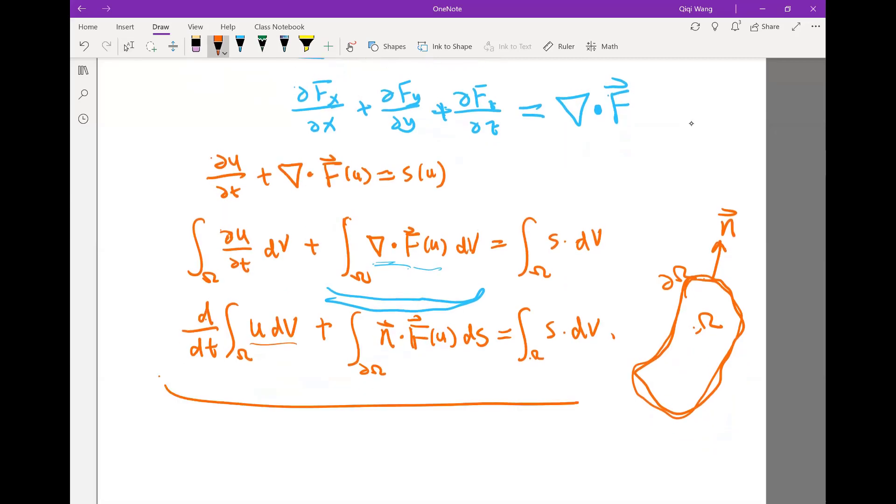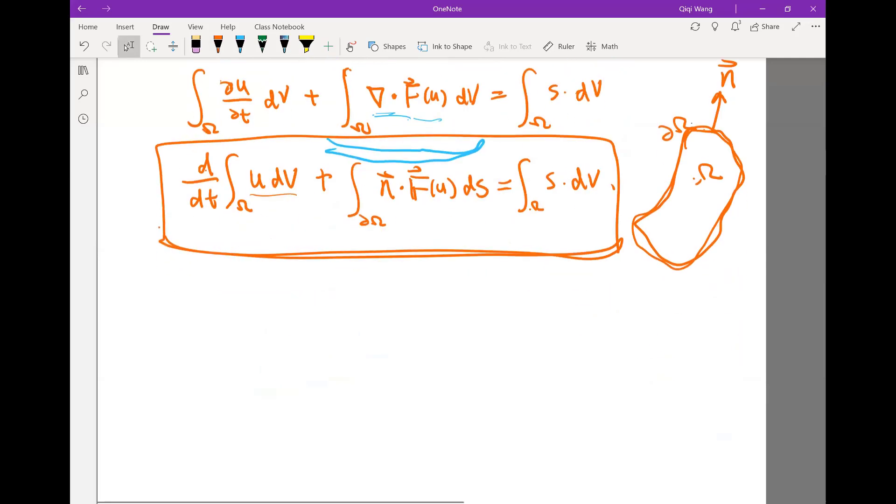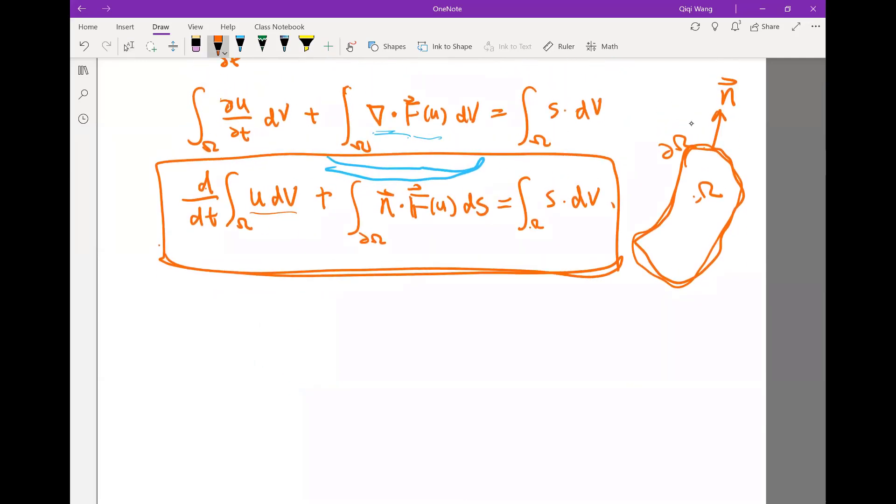So this is the form we discretize in finite volume. In finite volume, mostly we deal with a mesh that is either Cartesian or we have an unstructured mesh, and the most typical component in unstructured mesh is a tetrahedron.